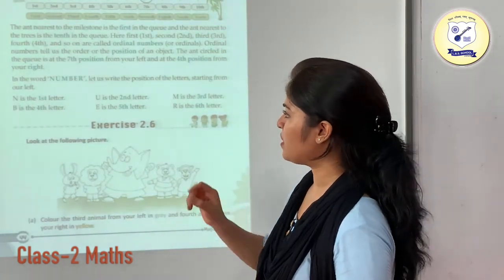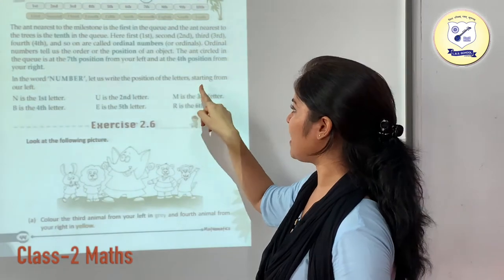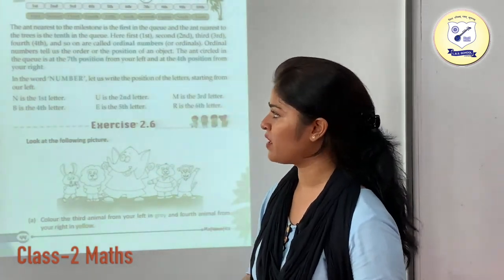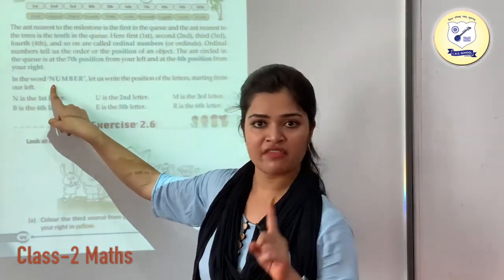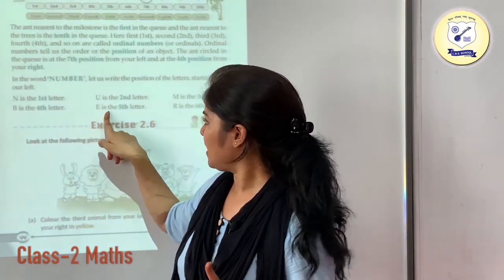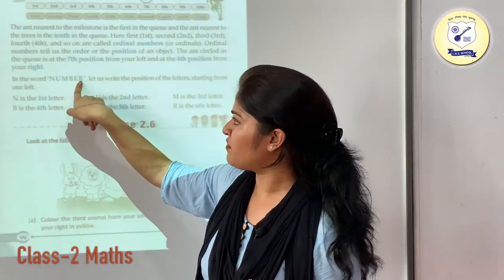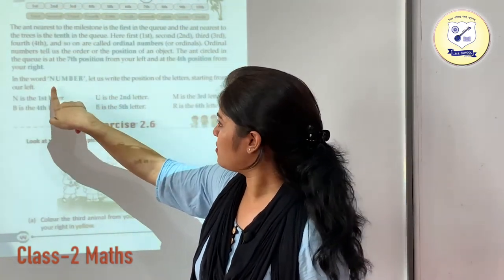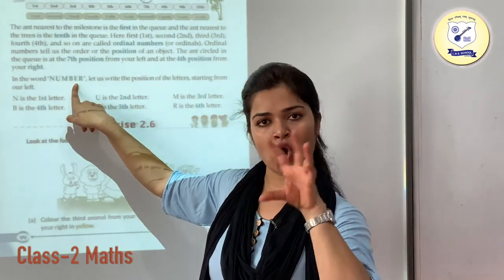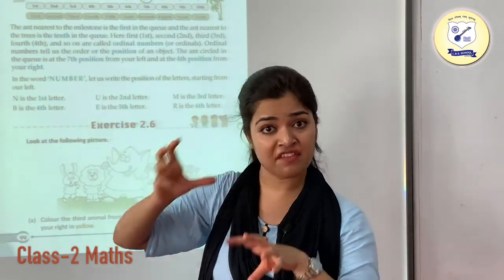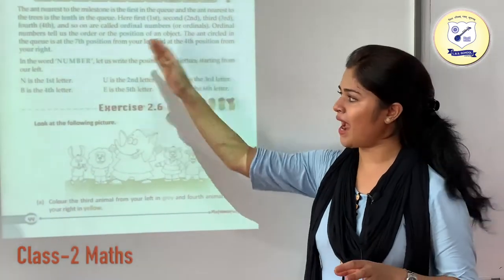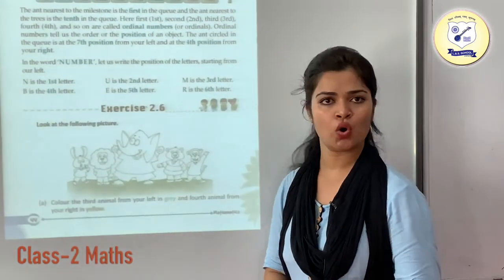In the word NUMBER, let us write the position of each letter starting from the left. N is on first position, U is on second. E is on fifth position — 1, 2, 3, 4, 5 — so 5 in ordinal number can be written as fifth. So E is on the fifth position, and so on.